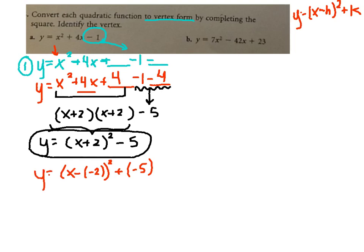So we need to write this as x minus a negative 2 quantity squared plus negative 5. Now we can see we have the minus, x minus, and we have the plus. So all you have to do now is take the h and the k. So negative 2 and then negative 5. And that's our vertex for the first one.